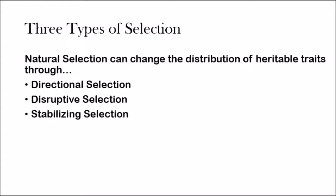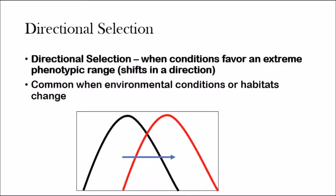The three types of selection: when you talk about natural selection, natural selection works in about three ways — directional selection, disruptive selection, and stabilizing selection. Directional selection is when a condition favors an extreme phenotypic range. Basically, it takes the population — let's say it's brown — and selects white, pushing everything to one side, making the phenotype focus way to one side. It's common when there's environmental or habitat change.